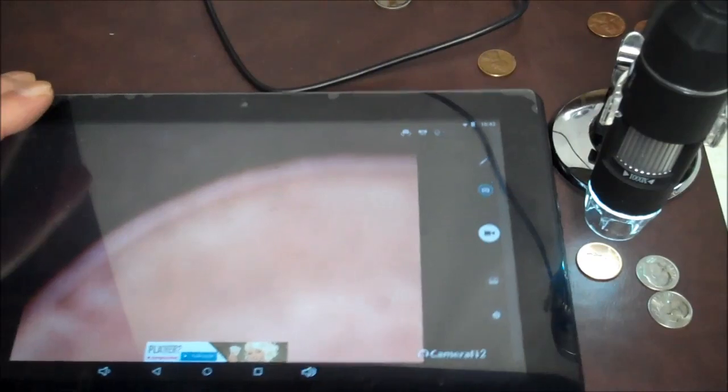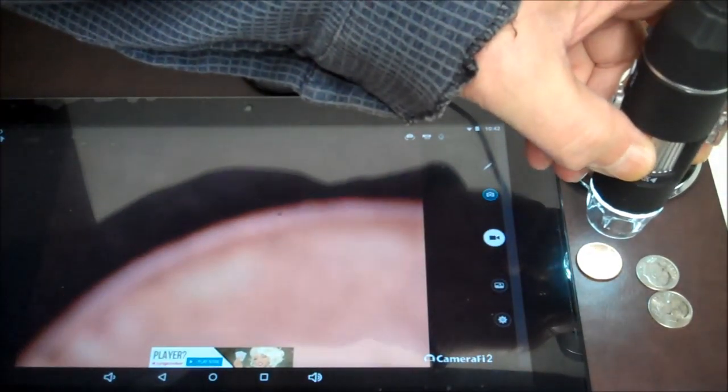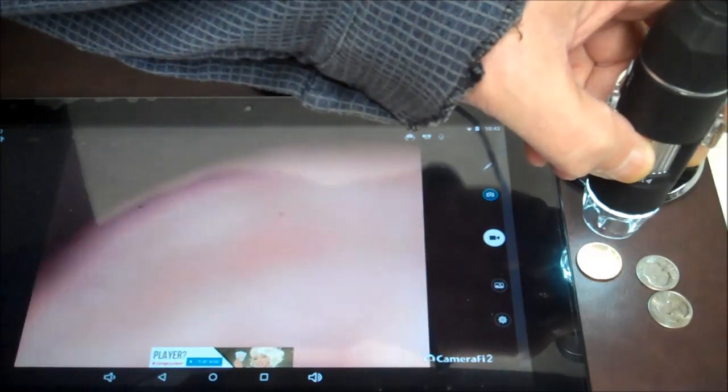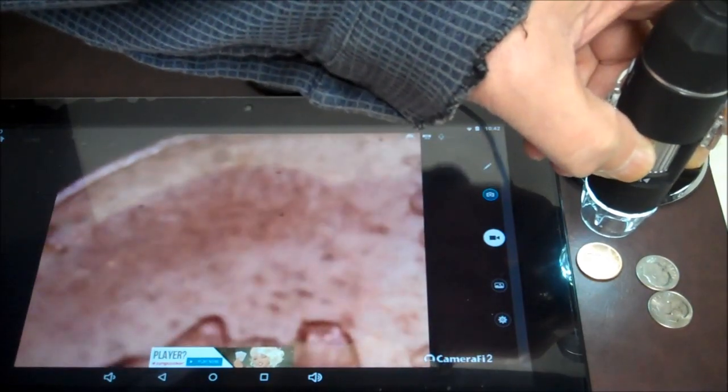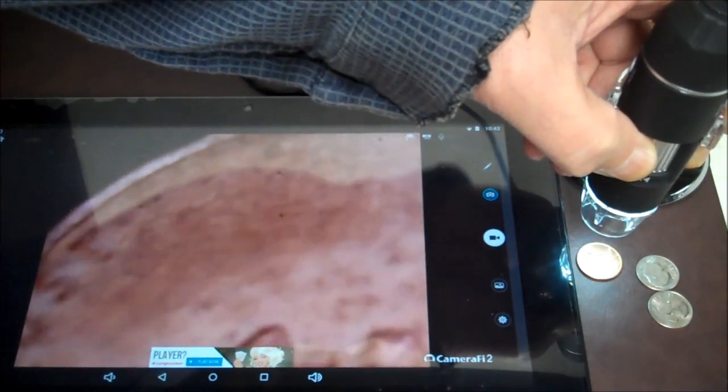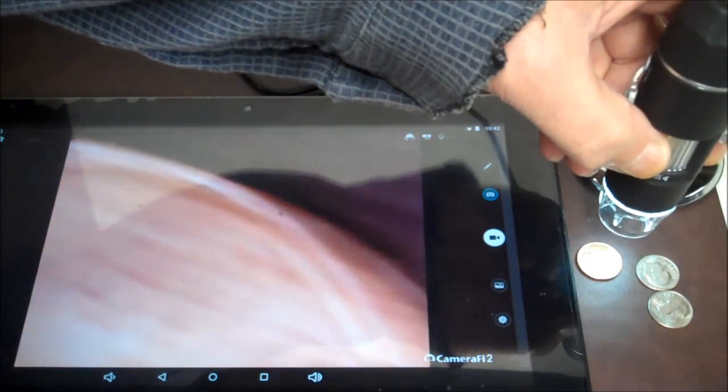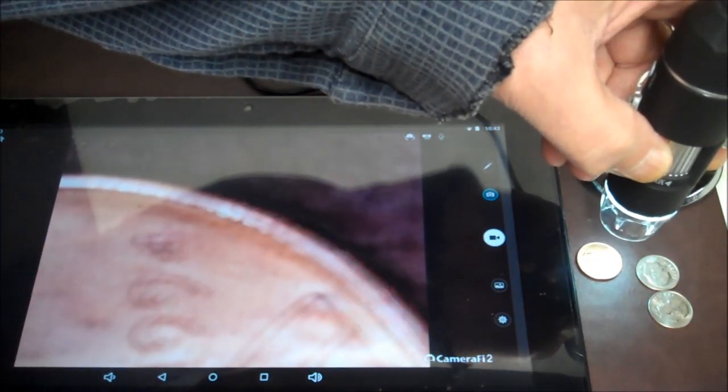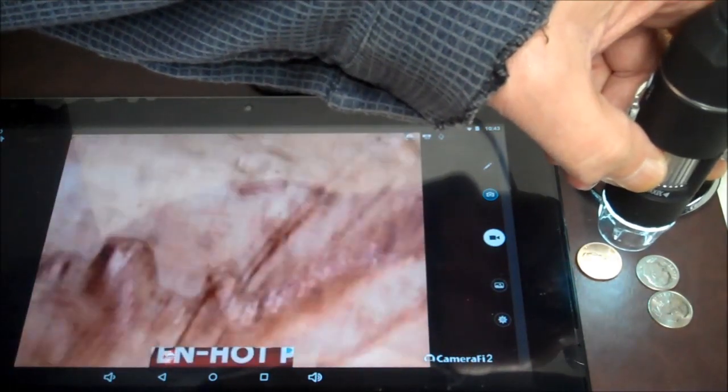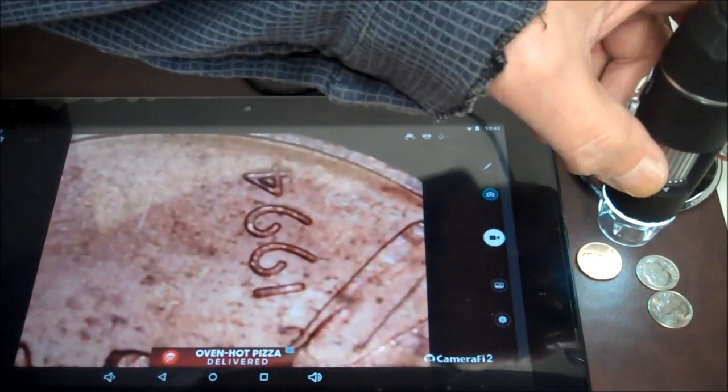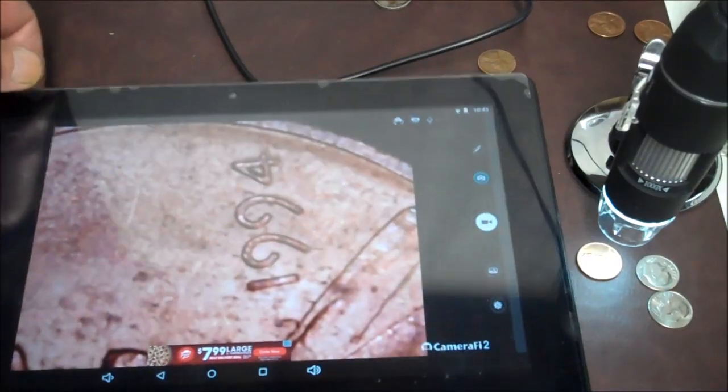Okay, now you can see it's on, right? Now let's focus on that penny there. So I'm just going to adjust the focus knob a little bit. And you can see you get a nice, nice close-up. There's the date 1994. You see the annoying ads popping up. There you go. I don't know if you can see that too good.